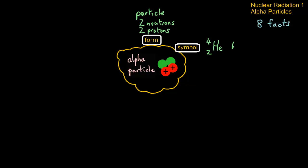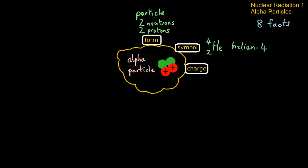This would be written as helium-4. We then have the charge on the alpha particle. It has two protons and no electrons around it, so it must have a charge of 2+.